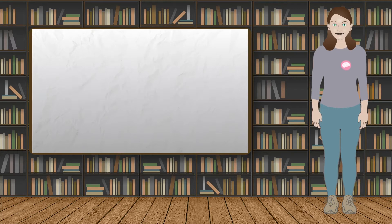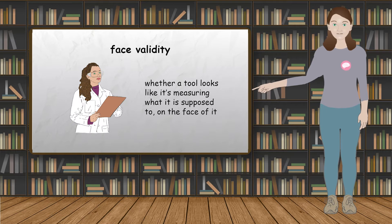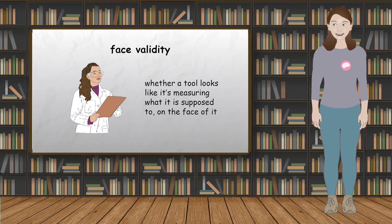Face validity is a measure of whether a tool looks like it's measuring what it's supposed to on the face of it. For example, whether an IQ test is actually a measure of intelligence.